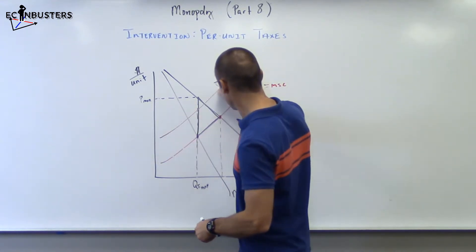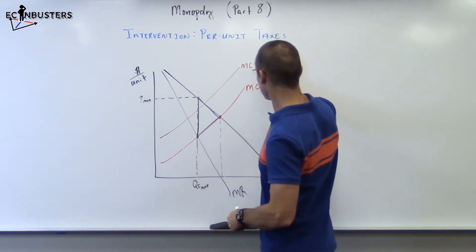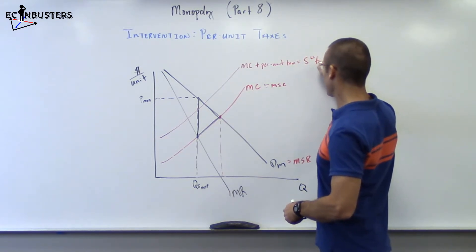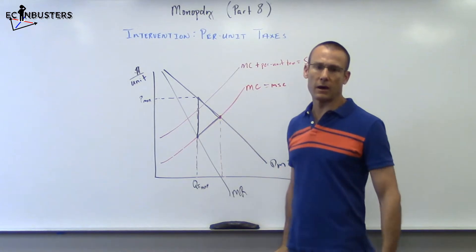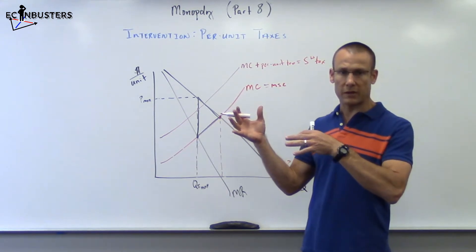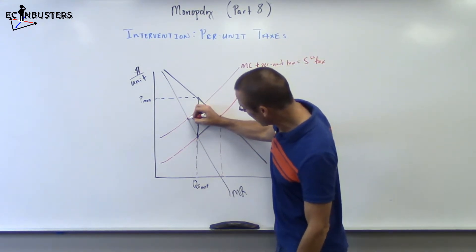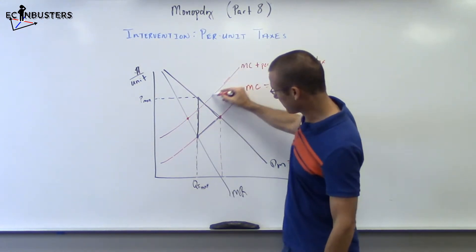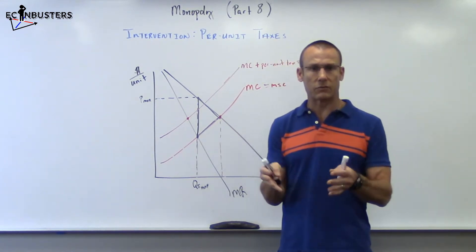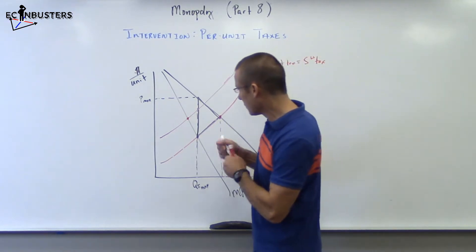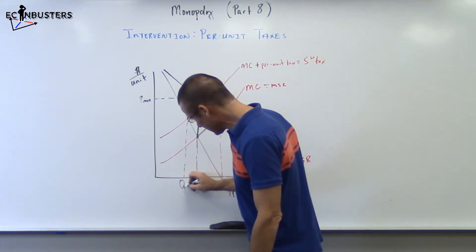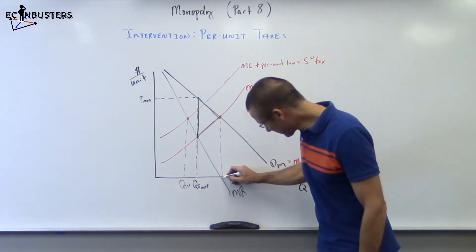Taxes add an additional cost, so I'm going to draw a new MC plus per unit tax curve above where the original one was. This is MC plus per unit tax — our new supply curve with tax. How much are we going to produce? The amount we produce is based on where the new MC plus per unit tax equals MR. Where do they intersect? Right here — that's the MR curve with the new MC with tax added on. So our output is going to drop, which should make sense: per unit taxes always decrease output.